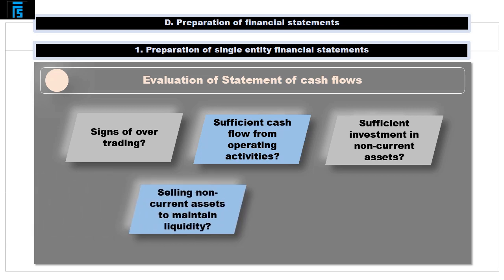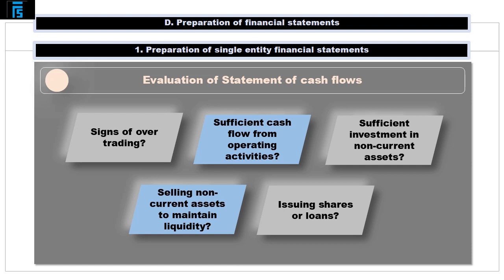Is the company selling non-current assets to maintain liquidity? And finally, is the company issuing shares, taking on fresh loans or repaying them? If it is increasing or reducing the scale of its borrowing, this will have obvious consequences for cash flow generation and usage in future periods.